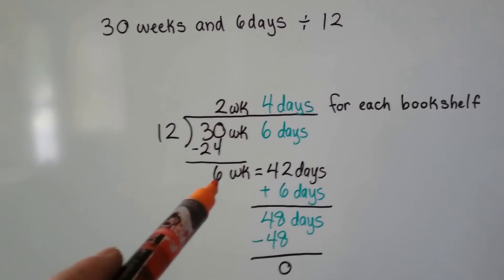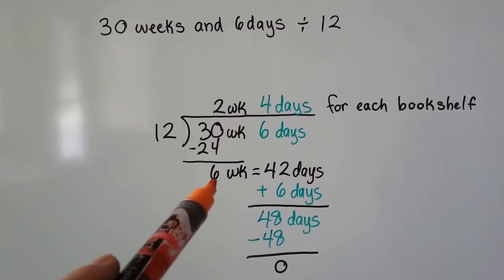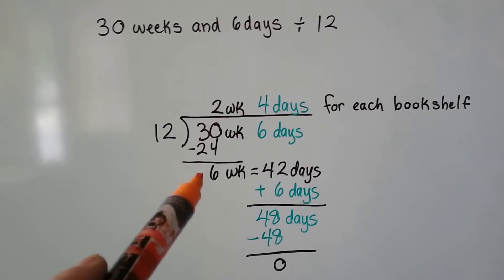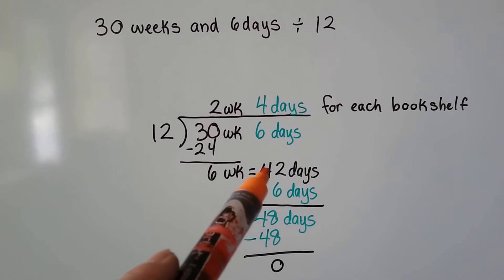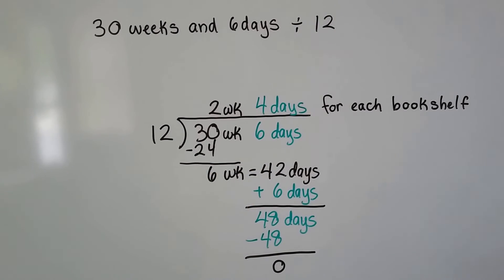But we need to drop the days down. So we need to convert the 6 weeks into days. There's 7 days in a week. So 6 times 7 is 42 days. 6 weeks is equal to 42 days.